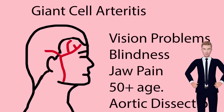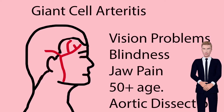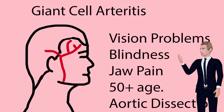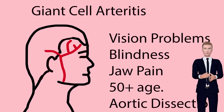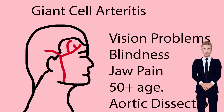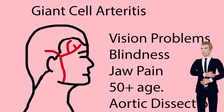Giant cell arteritis, also often called temporal arteritis, affects the superficial temporal artery and other medium and large-sized vessels. Symptoms may include headache, pain over the temples, flu-like symptoms, double vision, and difficulty opening the mouth. Complications can include blockage of the artery to the eye with resulting blindness, aortic dissection, and aortic aneurysm.